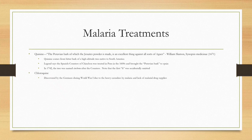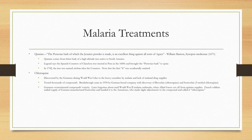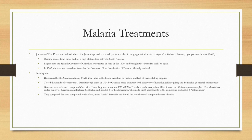Chloroquine arose from German research due to heavy malaria casualties during World War I. With low supplies of quinine, they screened thousands of compounds and had a breakthrough in 1934, discovering Resochin (chloroquine) and Sontochin (3-methylchloroquine), but overestimated their toxicity. During World War II, more malaria outbreaks occurred. French soldiers raided the German supply of Sontochin and handed it to the Americans, who made slight adjustments and called it chloroquine — and then realized it was essentially the same compound they had previously dismissed as toxic.